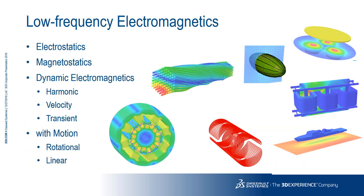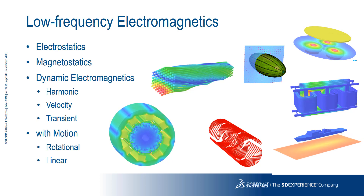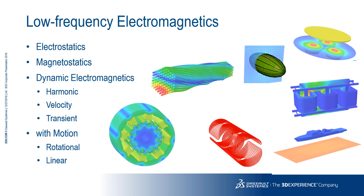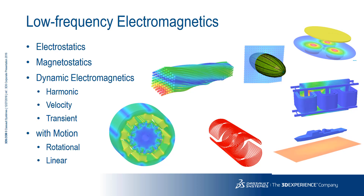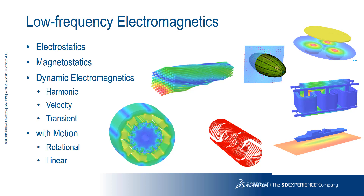Opera consists of a 2D and 3D interface with several solvers configured to be the most accurate and efficient ways of solving electromagnetic problems. Electrostatic and magnetostatic solvers allow highly accurate simulations of fields in many devices, including magnetic resonance imaging scanners and particle accelerators.